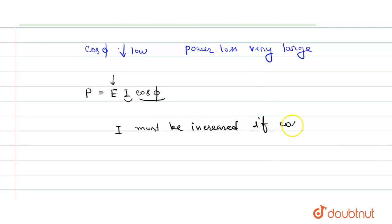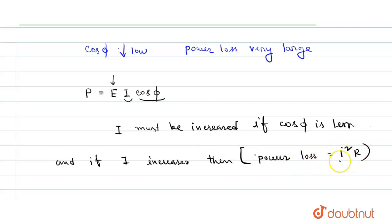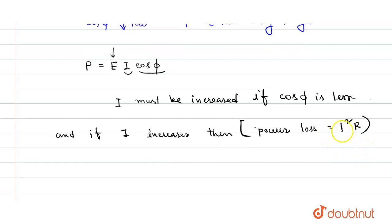If cosφ is less, and if current increases, then heat loss or power loss increases. Power loss is given by I²R. Since power loss equals I²R, and the value of I is increased, power loss will increase. The loss will be very large as it is proportional to the square of the current, so power loss will be very high.